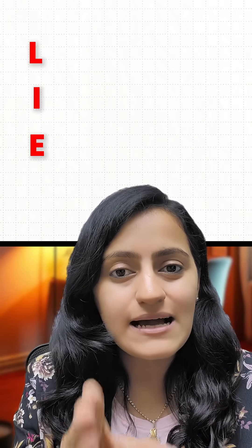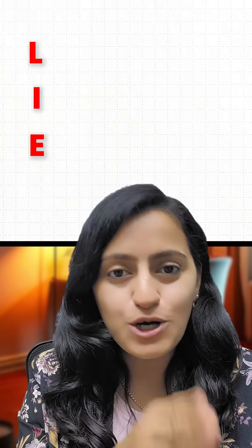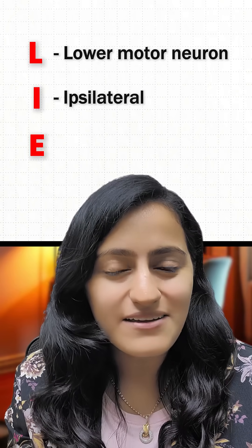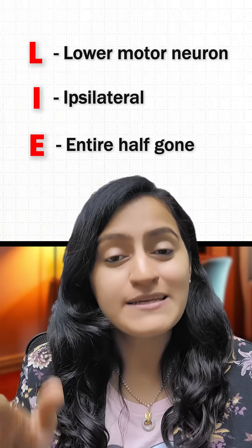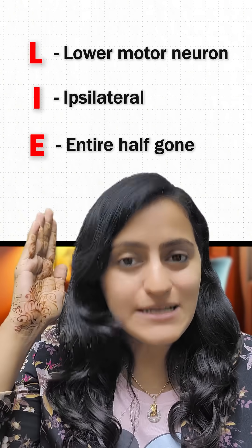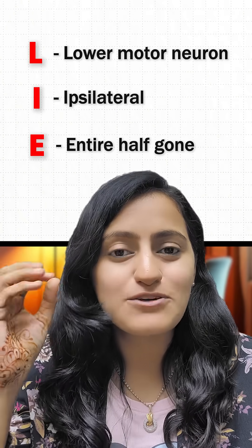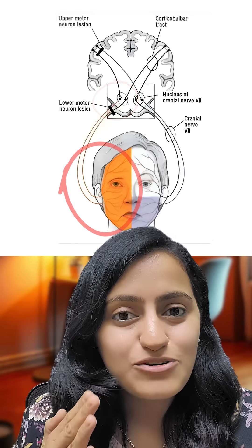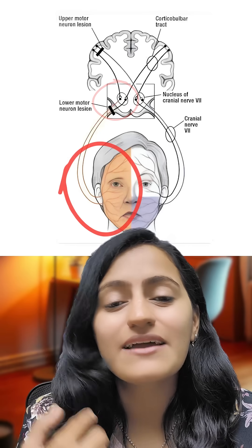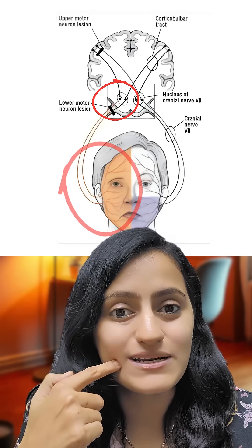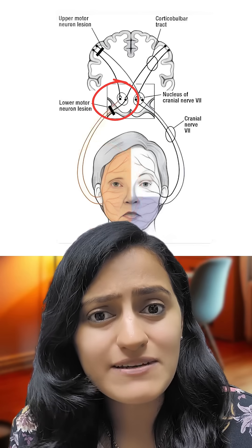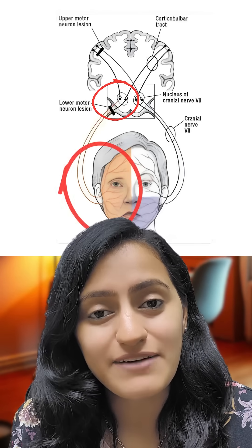Now coming to lower motor neuron, remember LIE: L for Lower motor neuron, I for Ipsilateral, E for Entire half is gone. So if there is right-sided facial nerve palsy, ipsilateral — that is, the entire right side, entire half — will be gone, both upper and lower.